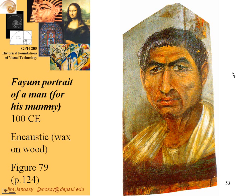Here's an interesting piece of art, and the reason I'm showing you this — which is figure 79 in the Gombrich text — is called encaustic. This is a pigmented wax on wood. The interesting thing about this is that you could probably recognize this person based on this picture.